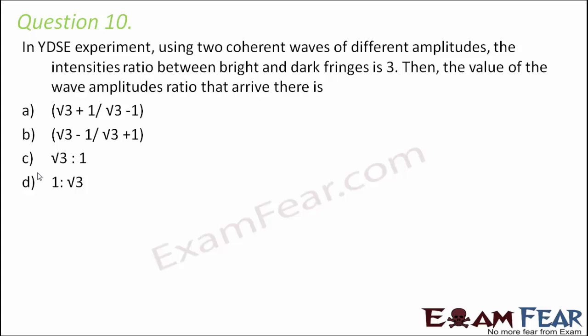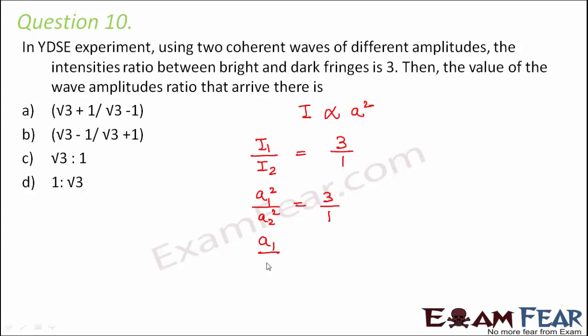Question Number 10. In YDSE using two coherent waves of different amplitudes, the intensity ratio between bright and dark fringes is 3. We need to find the wave amplitude ratio. We know intensity is proportional to amplitude squared, so I₁/I₂ = A₁²/A₂² = 3/1. Taking the square root, A₁/A₂ = √3 : 1. So option C is correct.